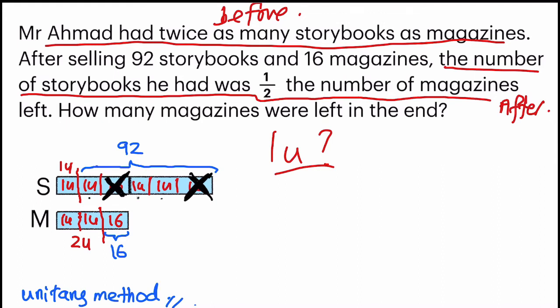So my first step is finding three units. I will take the total, which is 92, subtract the two 16 units that I have. So 92 minus 16 minus 16, and I will get 60.